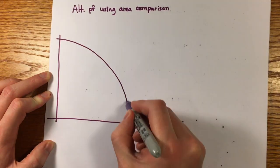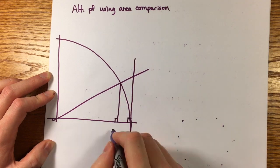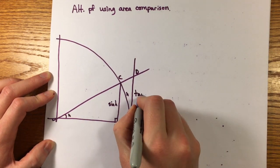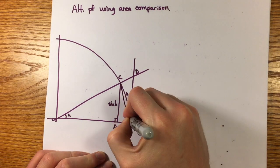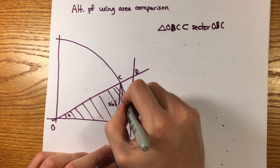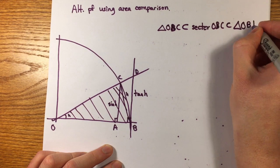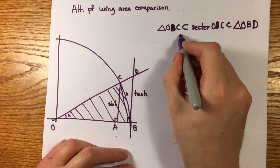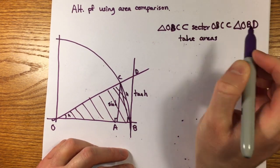Redraw the diagram and observe the triangle OBC is contained in the sector OBC, which is contained in the triangle OBD. Now, we may now compare areas, since for any notion of area, it must be that the area of a region contained in another region is bounded by the area of the larger region.